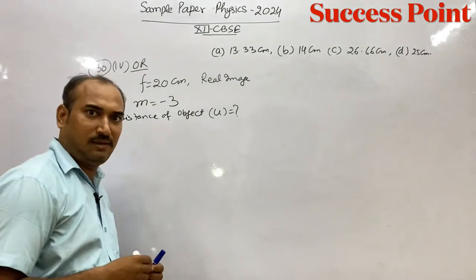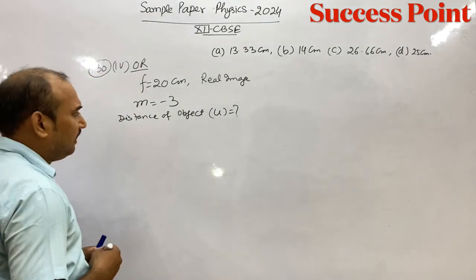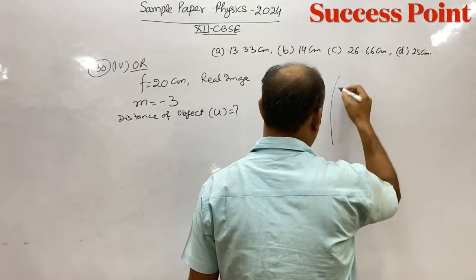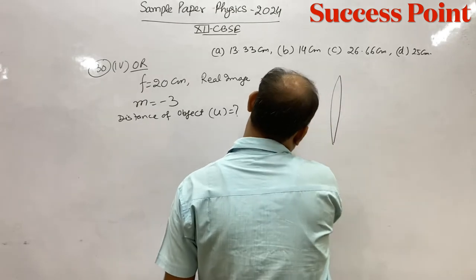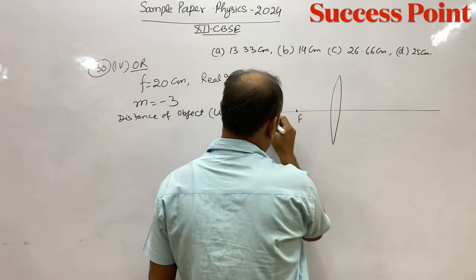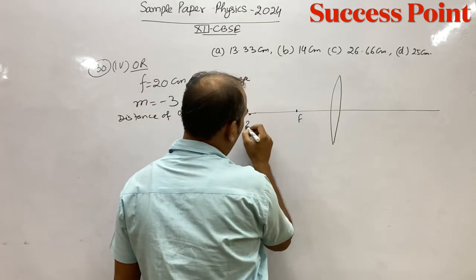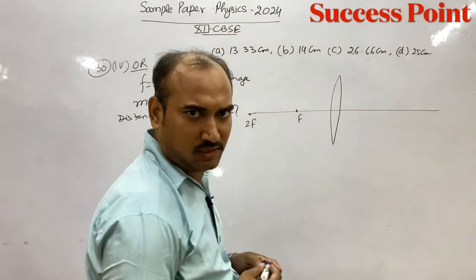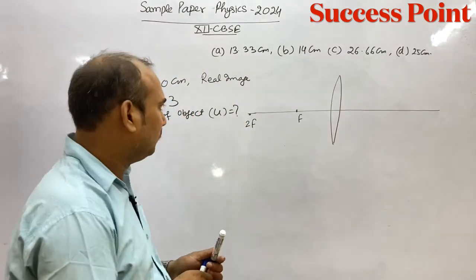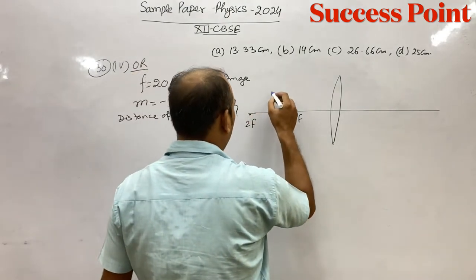Let's solve it. We know that if there is any lens, it makes a real image. If this is the focus and this is 2F, when does the real image form? And that too 3 times magnified, meaning large image. When the object is somewhere between f and 2F.